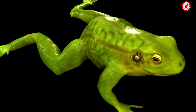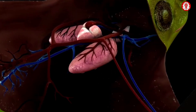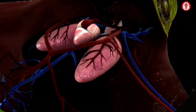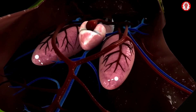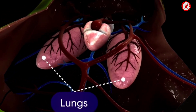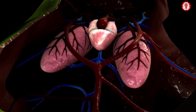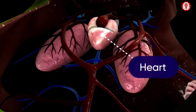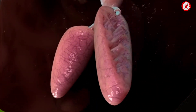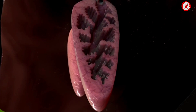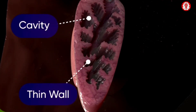Respiration through lungs is stated as pulmonary respiration. This process is observed when the frog is on land. Frogs possess a pair of lungs which are located anteriorly in the thoracic cavity on either side of the heart. These are pear-shaped, pinkish, hollow sac-like structures.